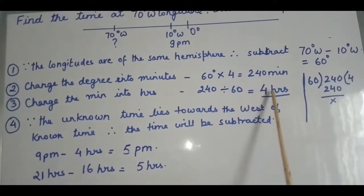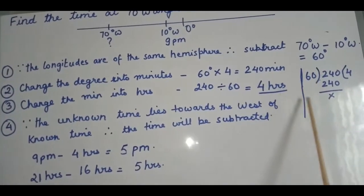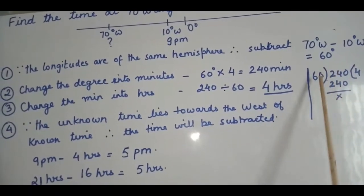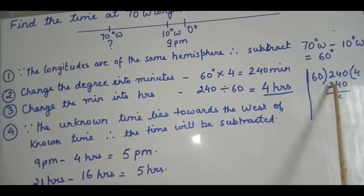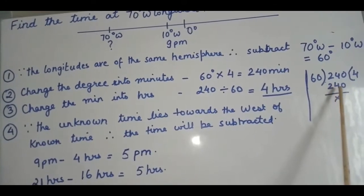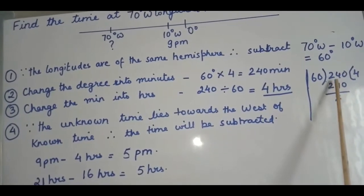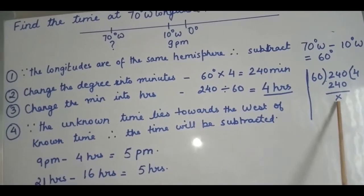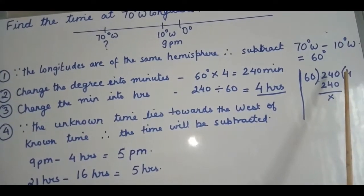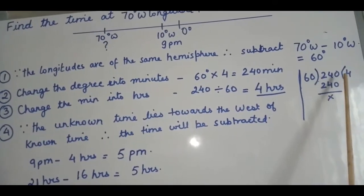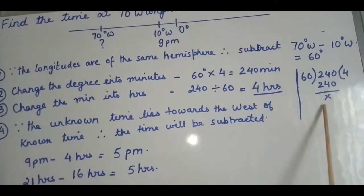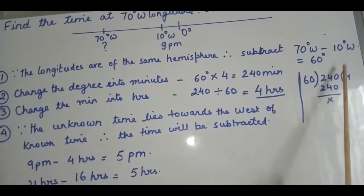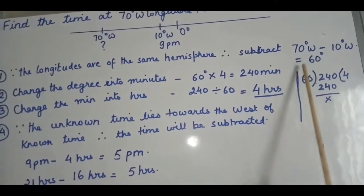To convert 240 minutes into hours, divide by 60 to get 4 hours. Always do division this way — don't write the answer as a decimal. For example, if the minutes were 220, the division would give 4 hours and 20 minutes, not 4.20. This is how you should always do the division.